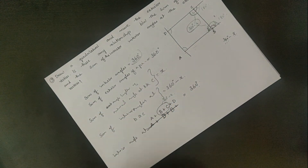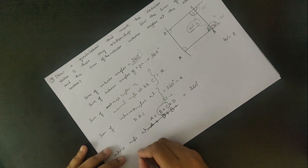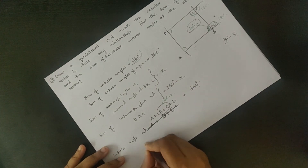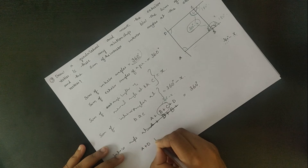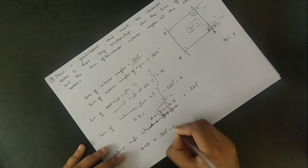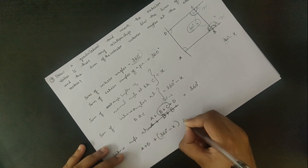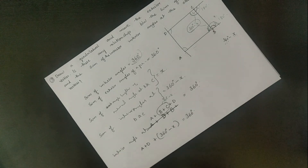Okay. Then we have the equation: interior angle A plus D plus 360 degrees minus x equals 360 degrees.